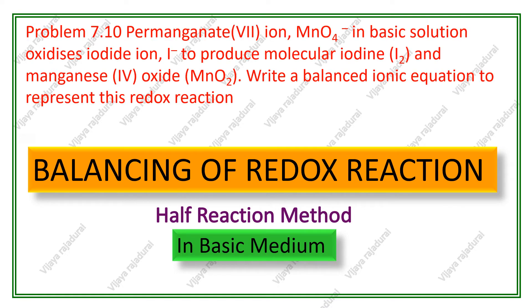The question is taken from 11th NCRT chemistry. Permanganate 7 ion in basic solution oxidizes iodide ion to produce molecular iodine and manganese 4 oxide. Write a balanced ionic equation to represent this redox reaction.